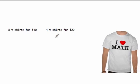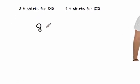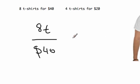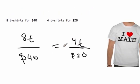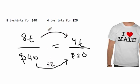A similar problem: are these rates equivalent? Let's find out. Eight t-shirts for forty dollars — I'll use the letter T to keep things shorter. We want to see if that's equal to twenty dollars for four t-shirts. What you want to check is: am I dividing by the same thing on both parts? I divide forty by two, that gives me twenty bucks. If I divide eight t-shirts by two, that equals four.